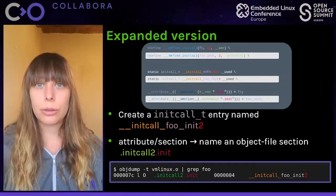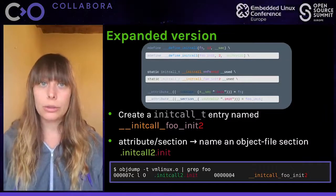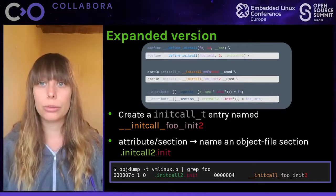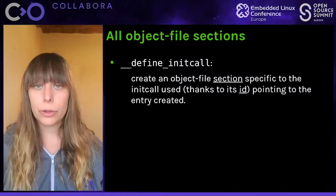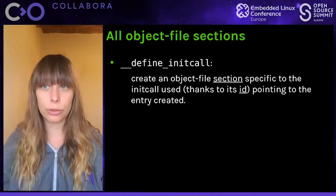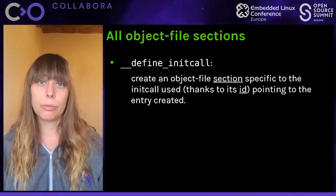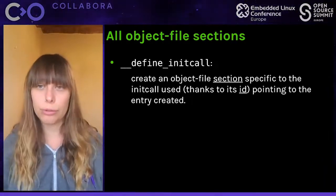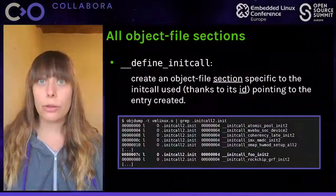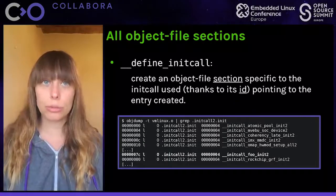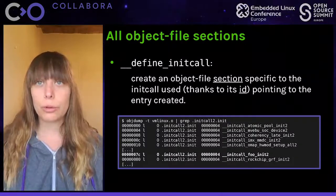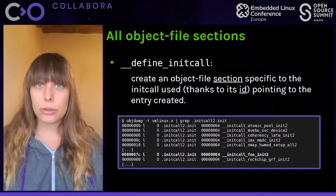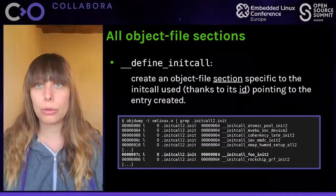To summarize, __define_initcall creates a section in the object file specific to the init call used — different according to the id — and this section points to an entry that links to our function. We can retrieve other sections for this particular level by looking at all ".initcall2.init" sections. We could do the same for core_initcall by filtering to ".initcall1.init". Notice that the addresses of all sections follow each other, which is important as we will see later.